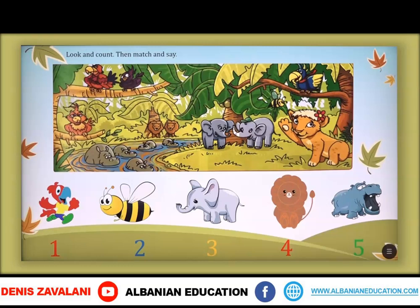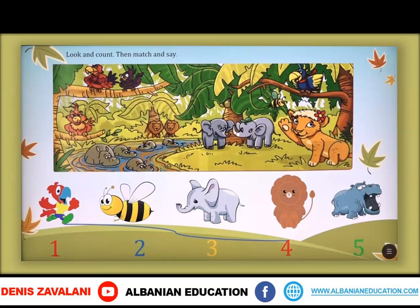Let's match the parrot with a number. Let's continue with the bees. Le të vazhdojmë me bletët. How many bees are there in the photo? One. Yes, there is just one bee in the photo. Në fotografi kemi vetëm një bletë. Let's match the bee with a number. Le t'i lidhim bletën me numrin. One.